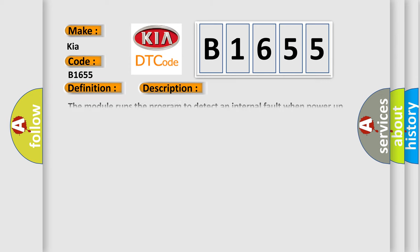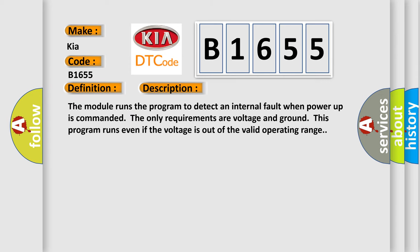And now this is a short description of this DTC code. The module runs the program to detect an internal fault when power-up is commanded. The only requirements are voltage and ground. This program runs even if the voltage is out of the valid operating range.